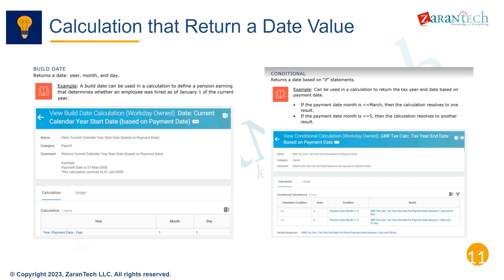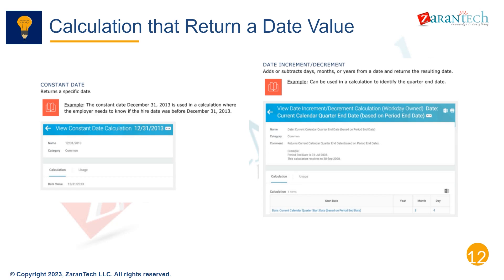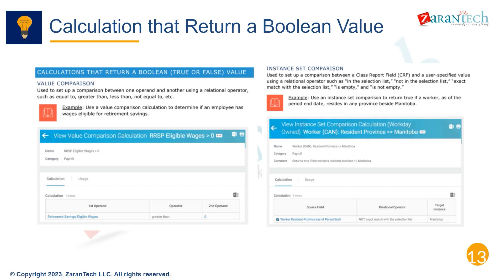A common date calculation is to determine the next review date by adding 12 months to the most recent review date, generating the date when an employee is due for their next performance evaluation. Another example is calculating the eligibility date for 401k enrollment, which may return the hire date plus 60 days as a waiting period before the plan can be joined. Return date values like these are helpful for determining eligibility windows.